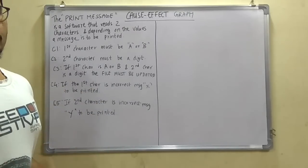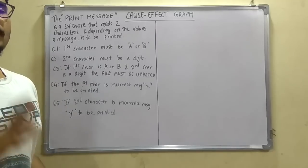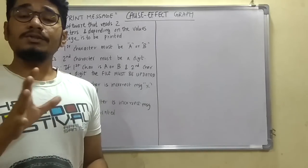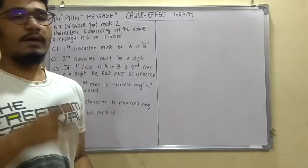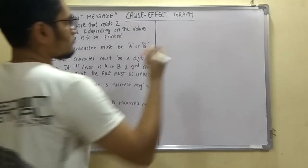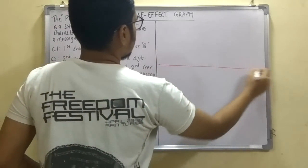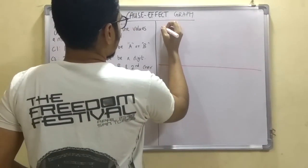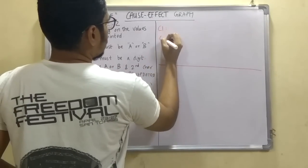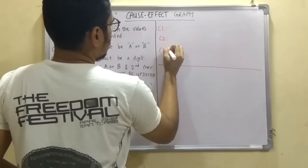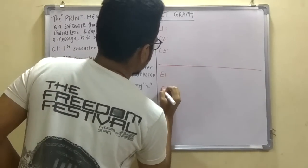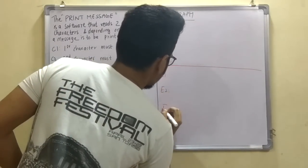The problem is simple. Now we have to design a table — similar to how we designed conditions and actions in decision table testing, here we design a causes and effects table. We have three causes: C1, C2, and C3, and three effects denoted as E1, E2, and E3.